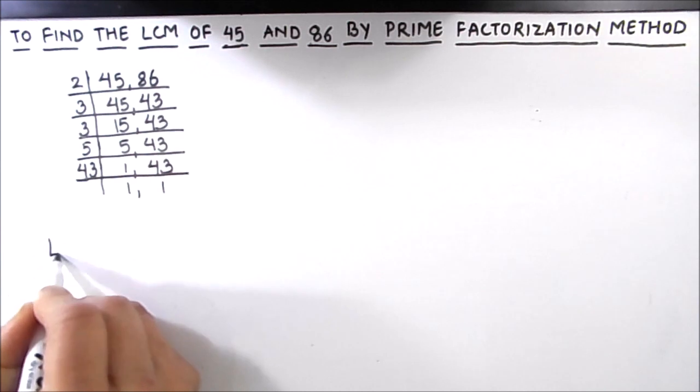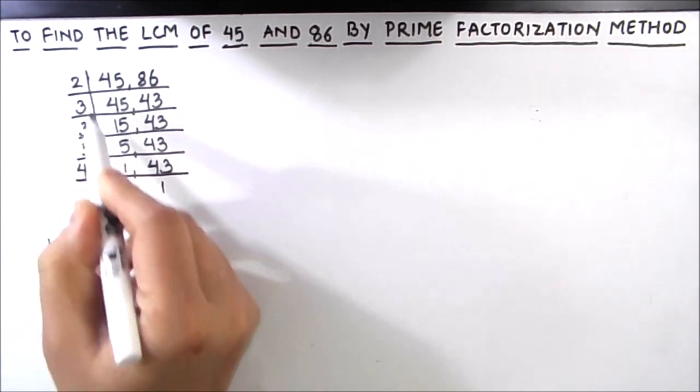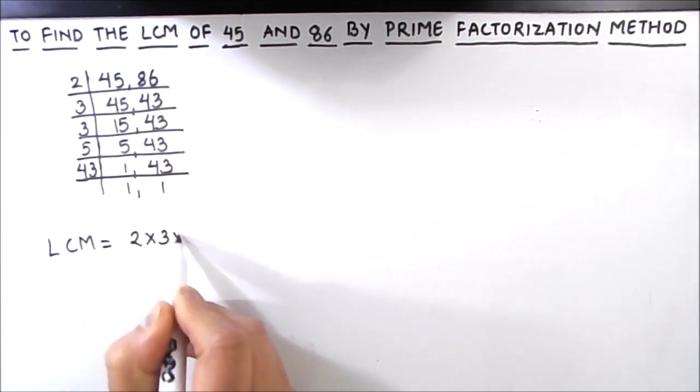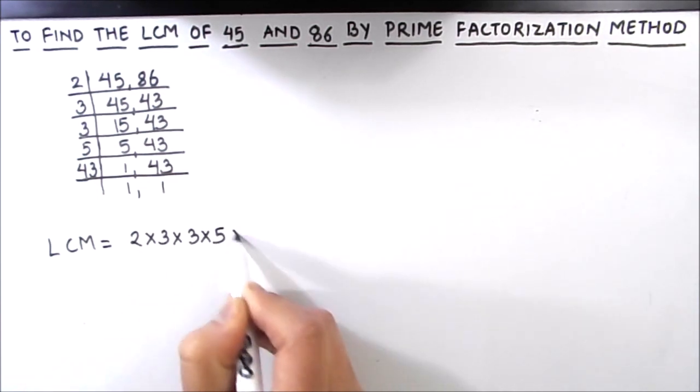Now the LCM of the two numbers will be the product of all the numbers on the left hand side. So this is going to be 2 times 3 times 3 times 5 times 43.